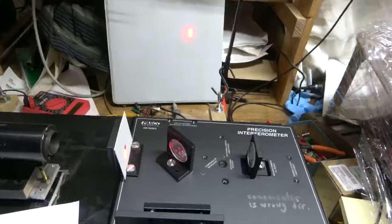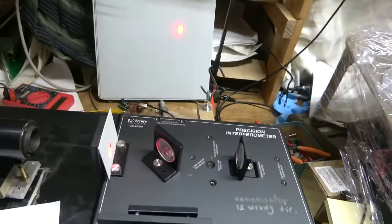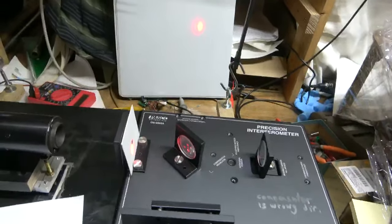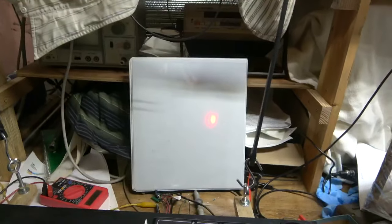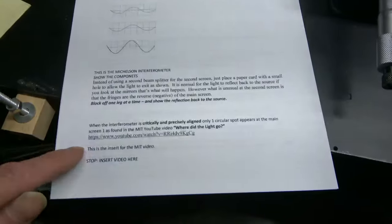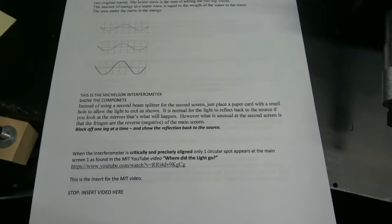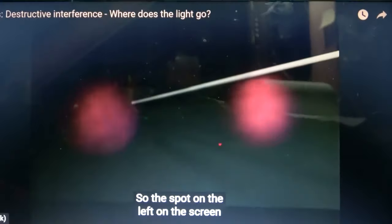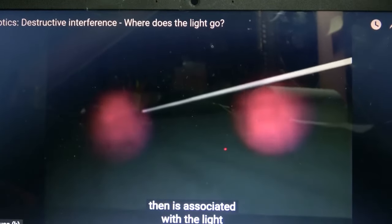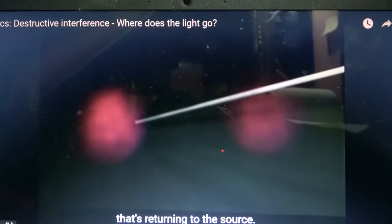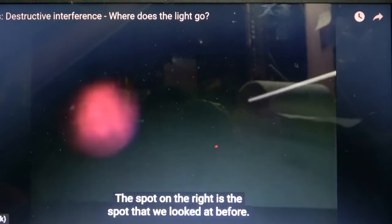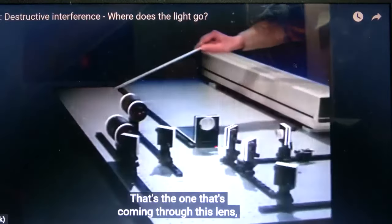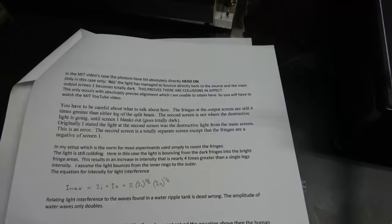When the interferometer is critically aligned with only one circular spot appearing at the main screen, as found in the MIT video, where did the light go? Here's the reference for it. I'm going to insert the video in here now. The left on the screen then is associated with the light that's returning to the source. The spot on the right is the spot that we looked at before. That's the one that's coming through this lens.